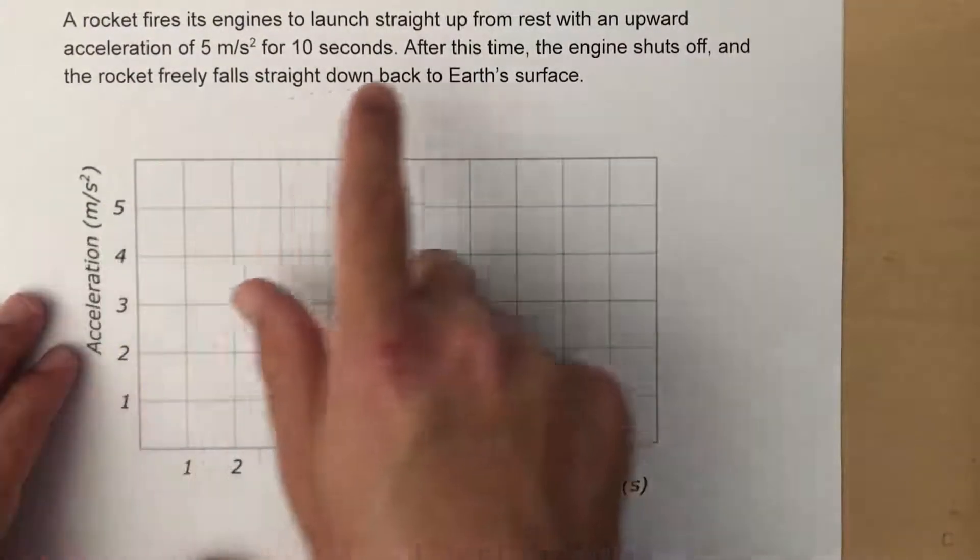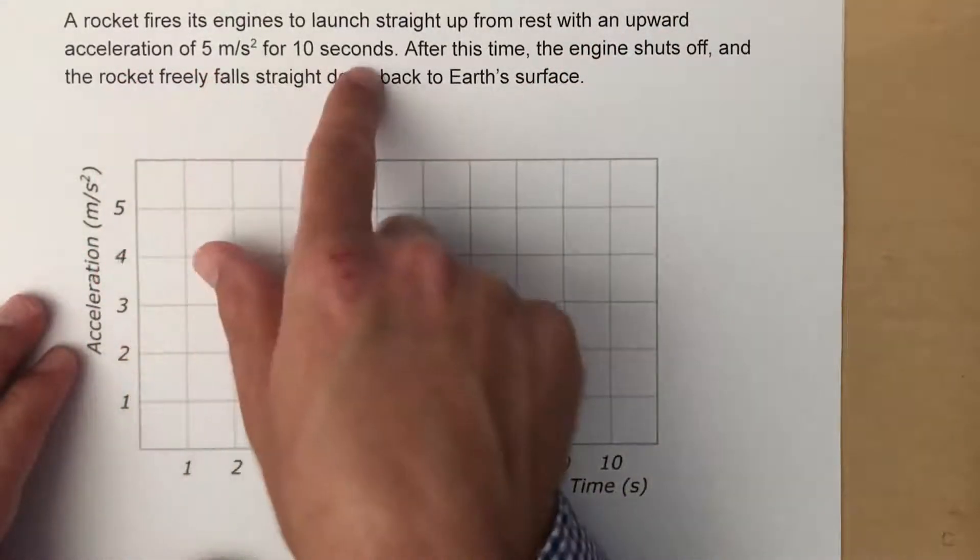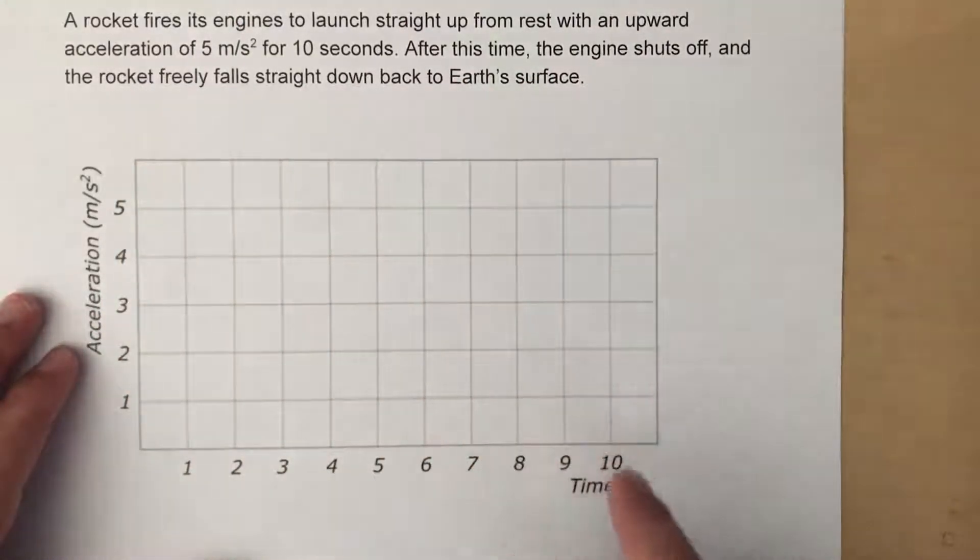They tell us that a rocket fires its engine to launch straight up from rest with an upward acceleration of 5 meters per second squared for 10 seconds. After this time, the engine shuts off and the rocket freely falls back down to Earth's surface.